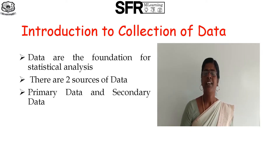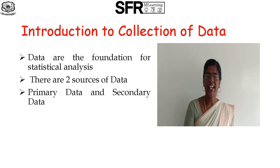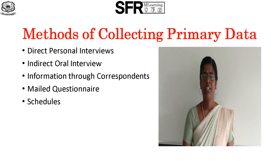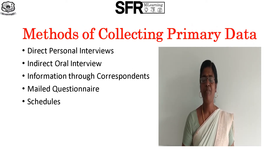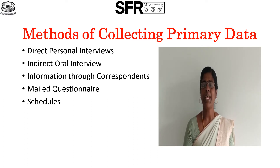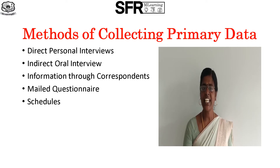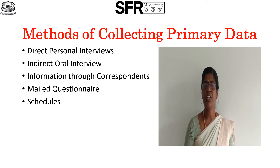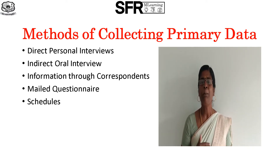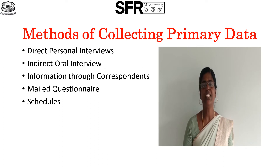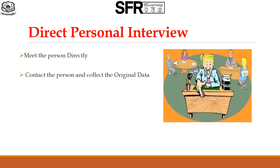Primary data is collected first hand by the investigator concerned. There are five methods of collecting primary data: one is direct personal interview, second is indirect personal interview, third is information through correspondence, fourth is mail questionnaire, and fifth is schedule sent through enumerators. Let us see one by one.